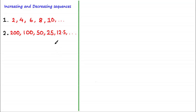Here we have two different sequences. The first one: 2, 4, 6, 8, 10 and so on. And the second one: 200, 100, 50, 25, 12.5 and so on.